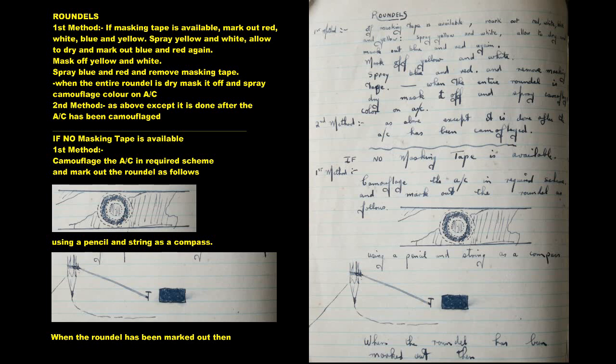If no masking tape is available: First method, camouflage the aircraft in required scheme and mark out the roundel as follows, using a pencil and string as a compass.